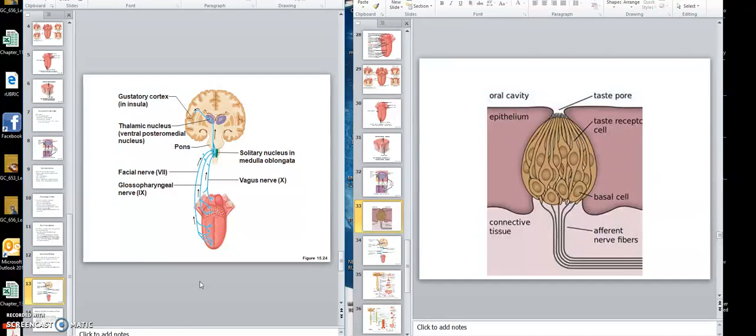PNAS. Posterior nine, anterior seven. PNAS, that goes to the gustatory cortex, which is in the insula, that insula lobe.